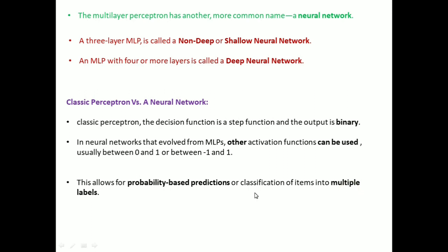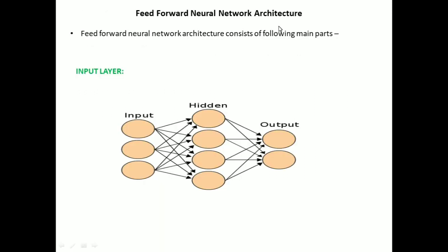This is the basic introduction to multi-layer perceptron. Let us now discuss the feed-forward neural network architecture. The feed-forward neural network architecture consists of the following main parts. The first layer is the input layer, which consists of the input data given to the neural network. This layer is generally depicted like neurons, but these are actually not artificial neurons with computational capabilities.